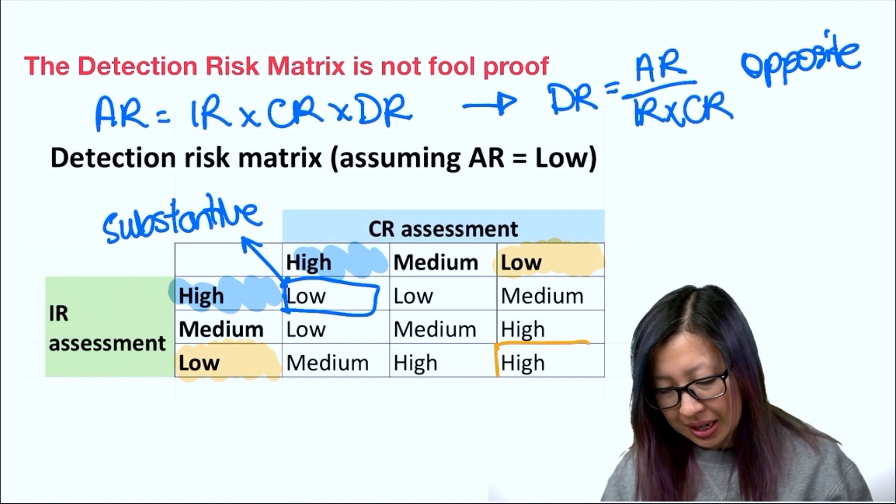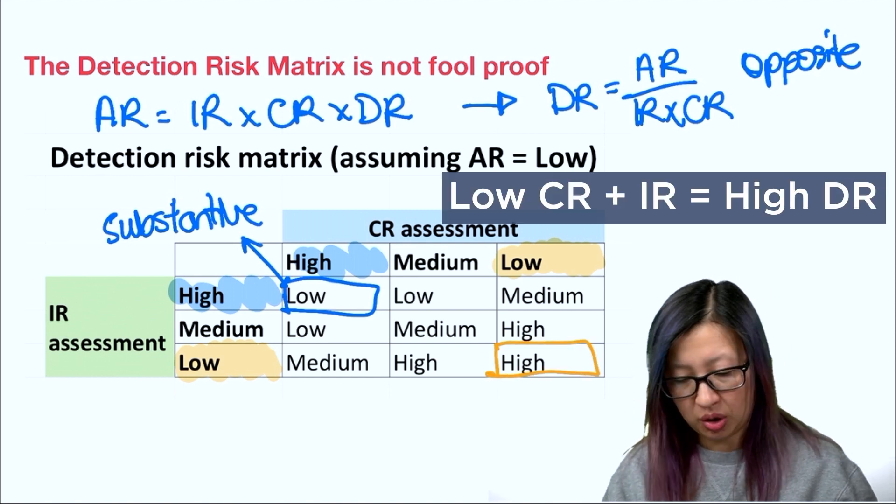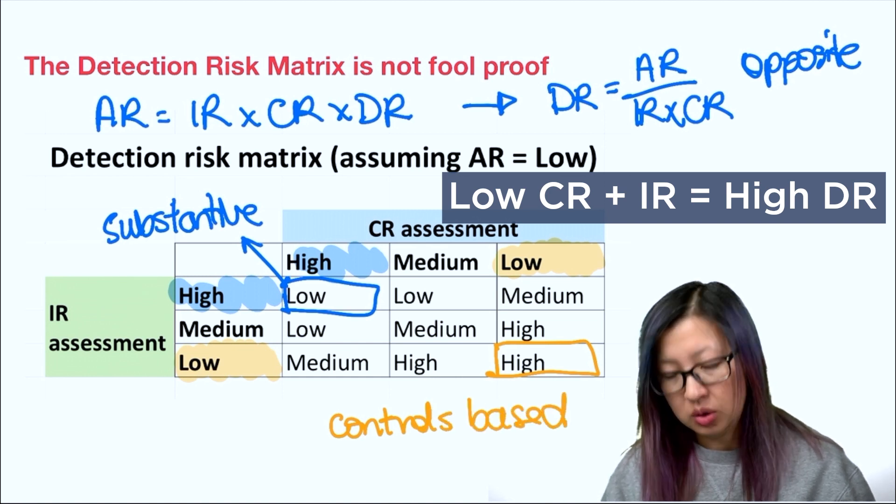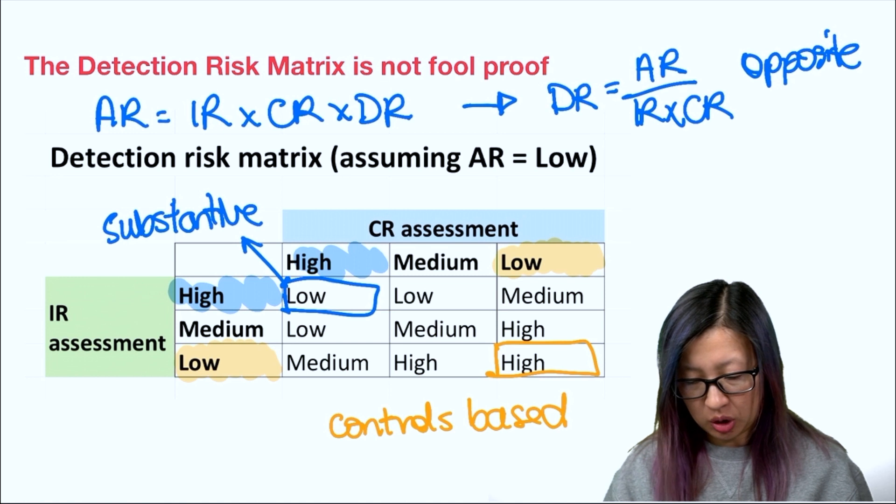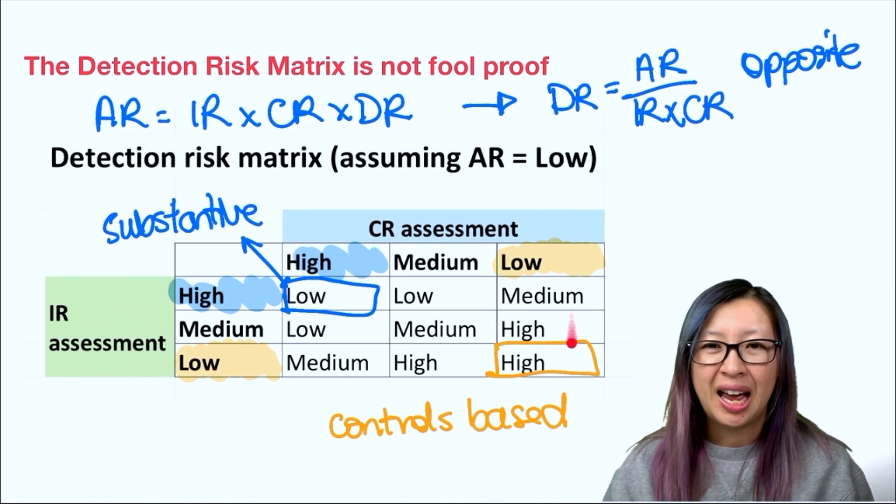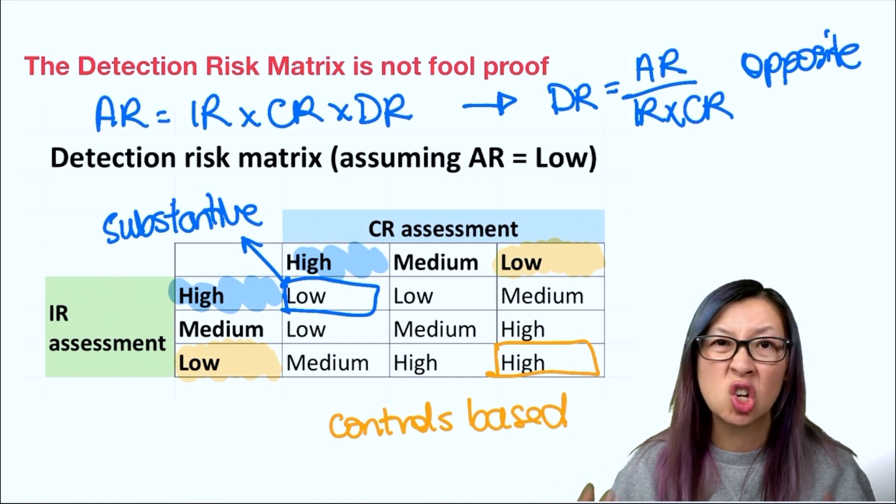I can take a high detection risk approach, which is a controls-based audit strategy. I'm going to focus on testing the internal controls and then do a very limited amount of substantive testing because there's not a lot to find. This is not a risky client.